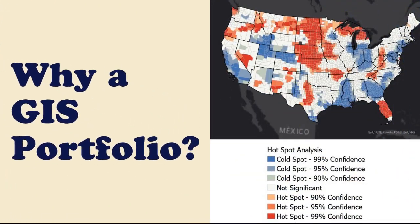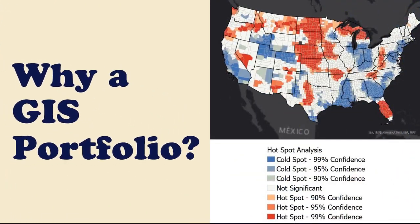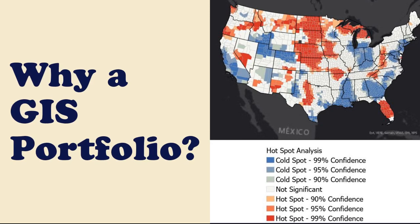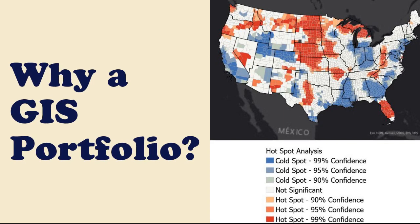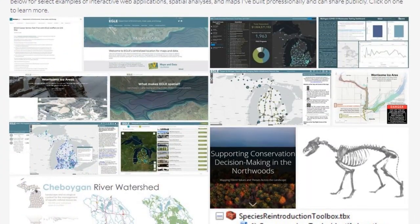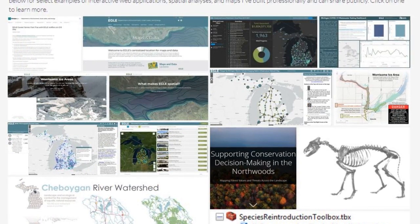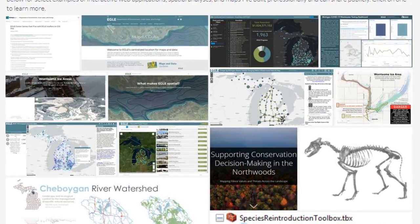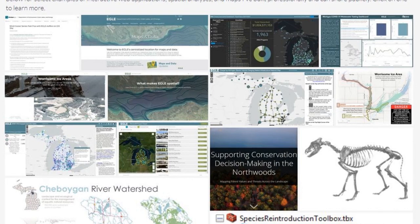Why a GIS portfolio? As you probably know, many of the outputs that we've been creating throughout Mesa's GIS program have been visual. This is a great opportunity to show rather than tell your employers what you can do. A GIS portfolio consists of different components such as maps, images, or story maps that portray your best GIS work.